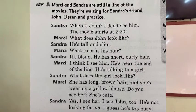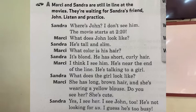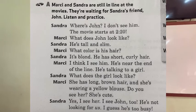The movie starts at 2:20. Marcy: 'What does John look like?' Sandra: 'He's tall and slim.' Marcy: 'What color is his hair?' 'It's blonde. He has short curly hair.' Marcy: 'I think I see him. He's near the end of the line. He's talking to a girl. What does the girl look like?' Marcy: 'She has long brown hair and she's wearing a yellow blouse.'